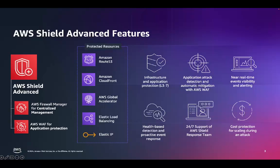You also have exclusive access to advanced real-time metrics and reports for extensive visibility into attacks on your AWS resources. As an AWS Shield Advanced customer, you can contact our 24/7 Shield Response Team for assistance during an attack. Associating a health check to your resources enables health-based detection for improved responsiveness and accuracy in attack detection and mitigation. Shield Advanced also offers cost protection against spikes in your AWS bill that might result from a DDoS attack against protected resources.